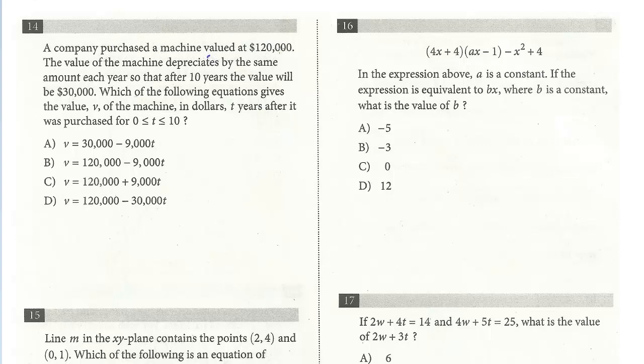A company purchased a machine valued at $120,000. The value of the machine depreciates by the same amount each year, so that after 10 years the value will be $30,000. Which equation gives the value V of the machine in dollars T years after it was purchased? We know this machine is losing value, and you see this term 'by the same amount.' This means it is linear. It's the same rate every year.